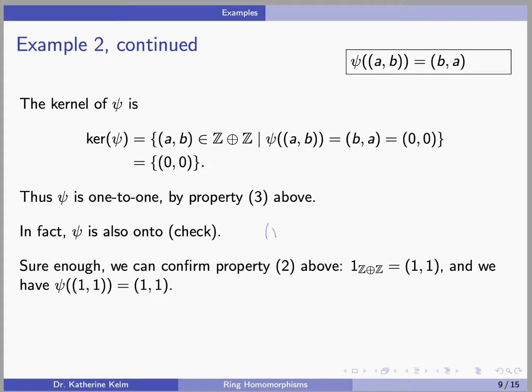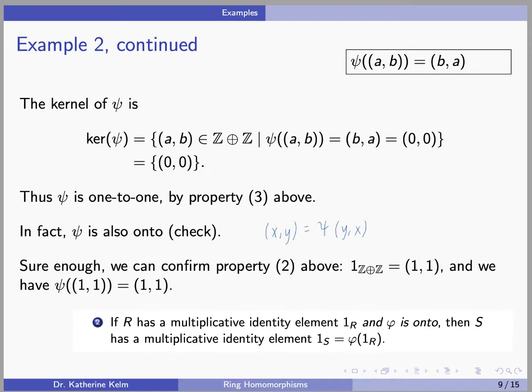In fact, psi is also onto because if we let (X, Y) be in Z⊕Z, then (X, Y) = psi(Y, X). We can confirm property 2: since the ring homomorphism is onto, the multiplicative identity element from R is sent to the multiplicative identity element from S. Sure enough, the multiplicative identity element here is (1, 1), and psi(1, 1) = (1, 1).